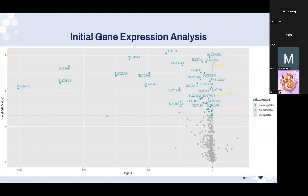Using the dataset from the paper, we conducted preliminary gene expression analysis by subsetting the SLC genes that were included. There were a large number of genes overall, so we highlighted those related to the SLC families. On that subset, we calculated the fold change and associated p-values through a package in R, and produced a graph highlighting genes that were significantly upregulated or downregulated.